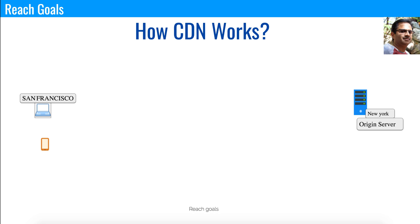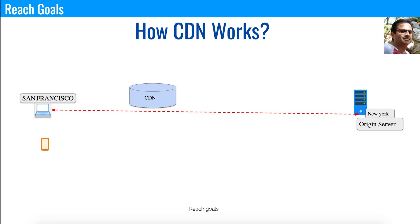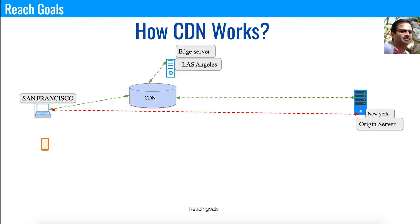Now let's understand how CDN actually works. Say a customer in San Francisco is accessing walmart.com, and the web application is deployed on an origin server in Newark. Without CDN, they have to access content directly from San Francisco to Newark — a long distance with high latency. With a CDN network, there will be a CDN location nearby with edge servers, so the content sits on the edge server and the user doesn't need to go to the origin server.